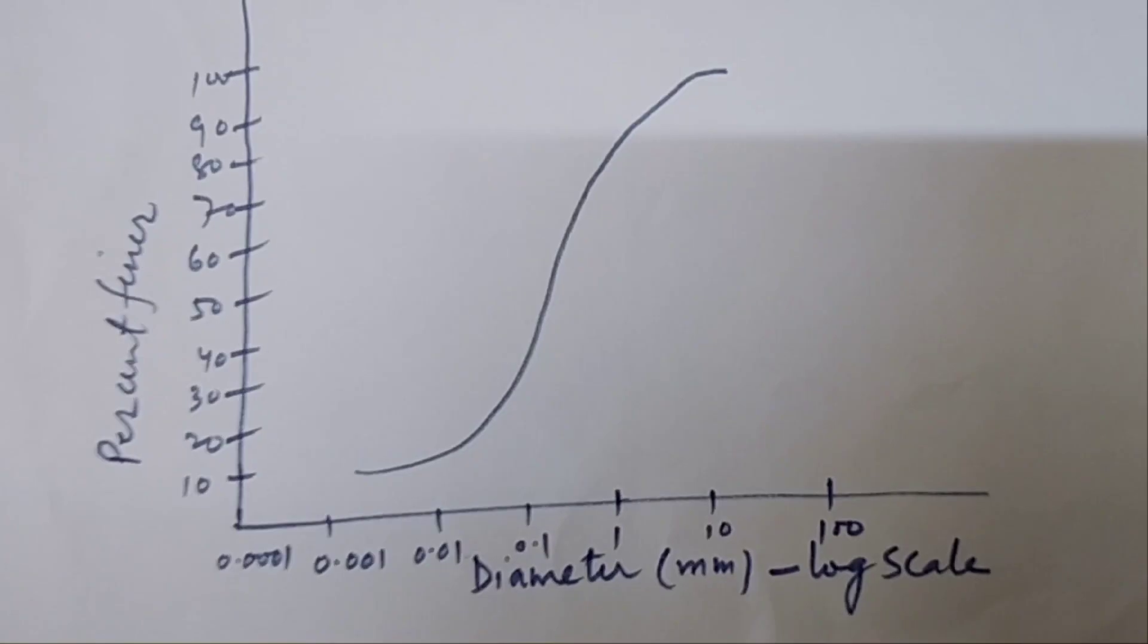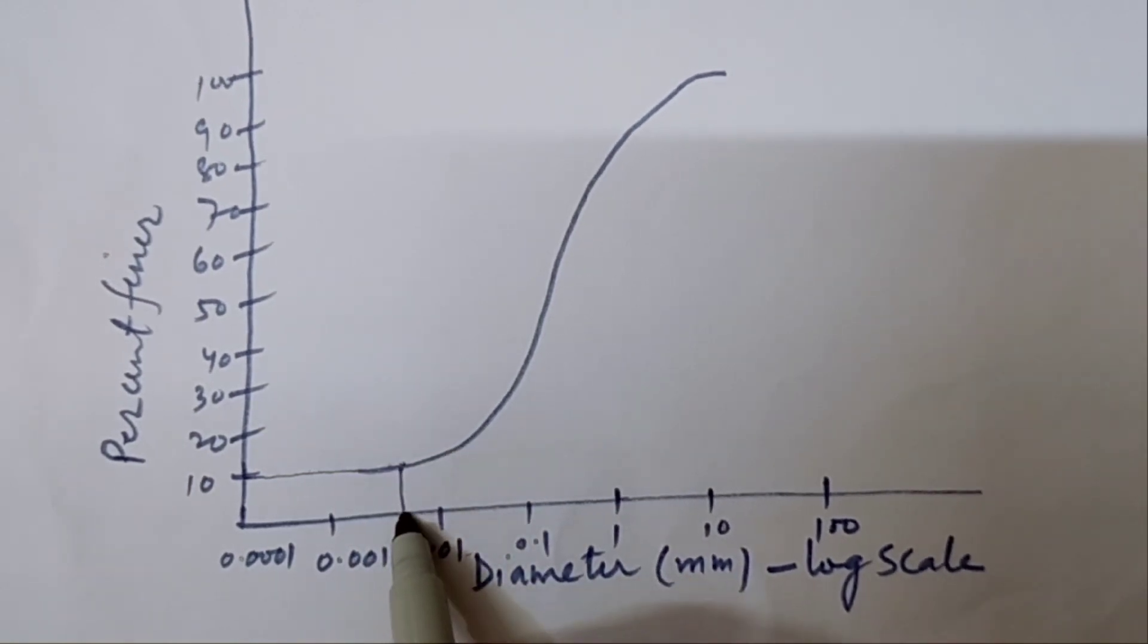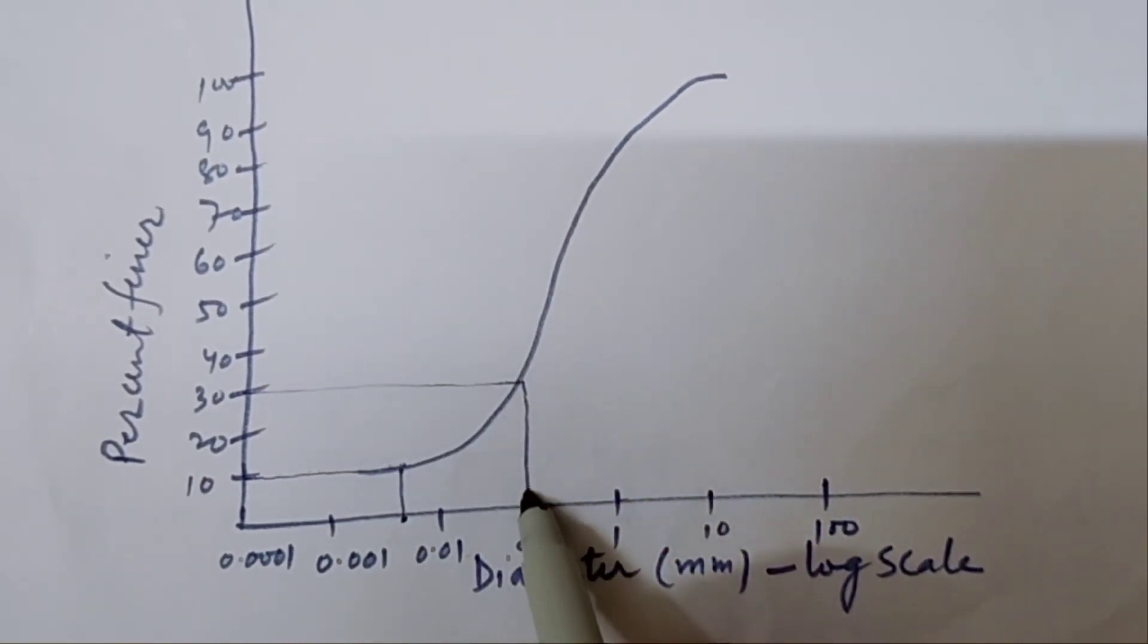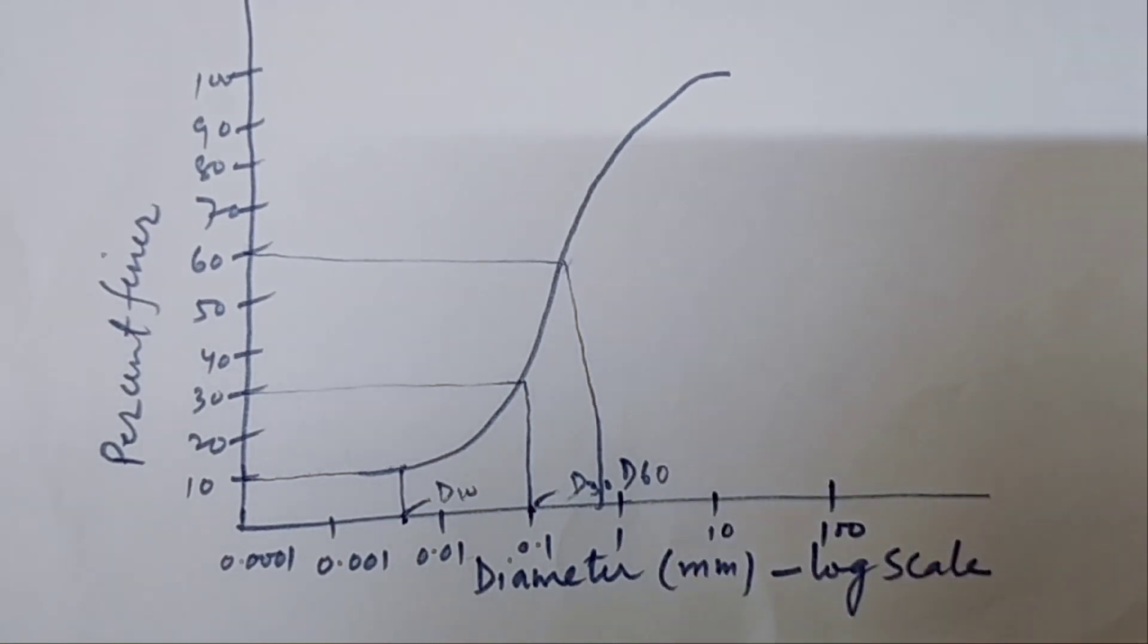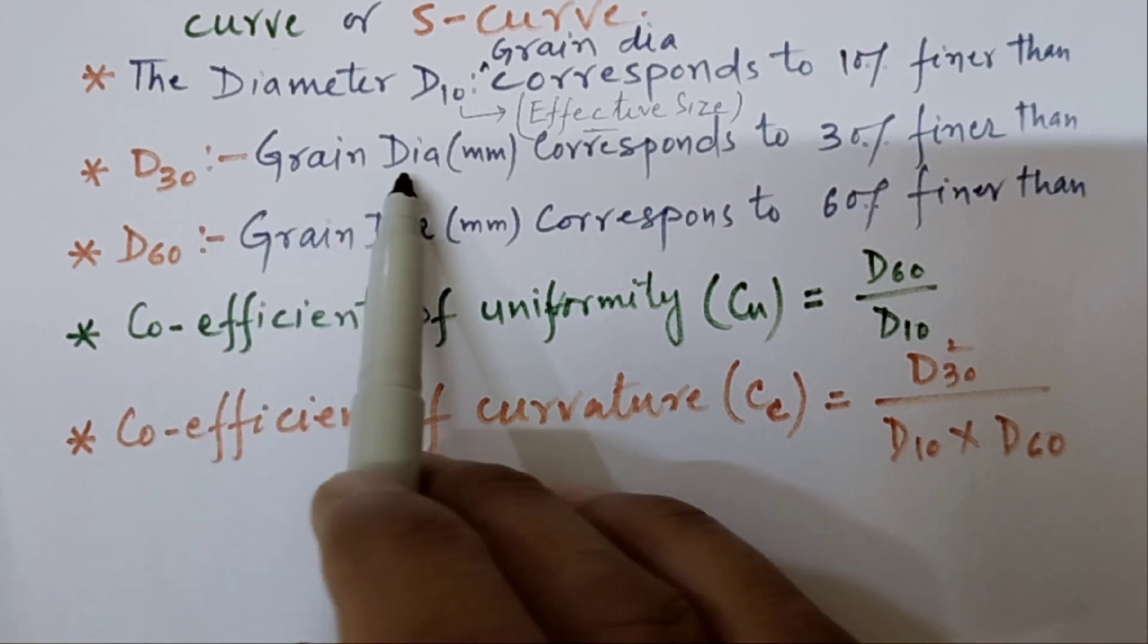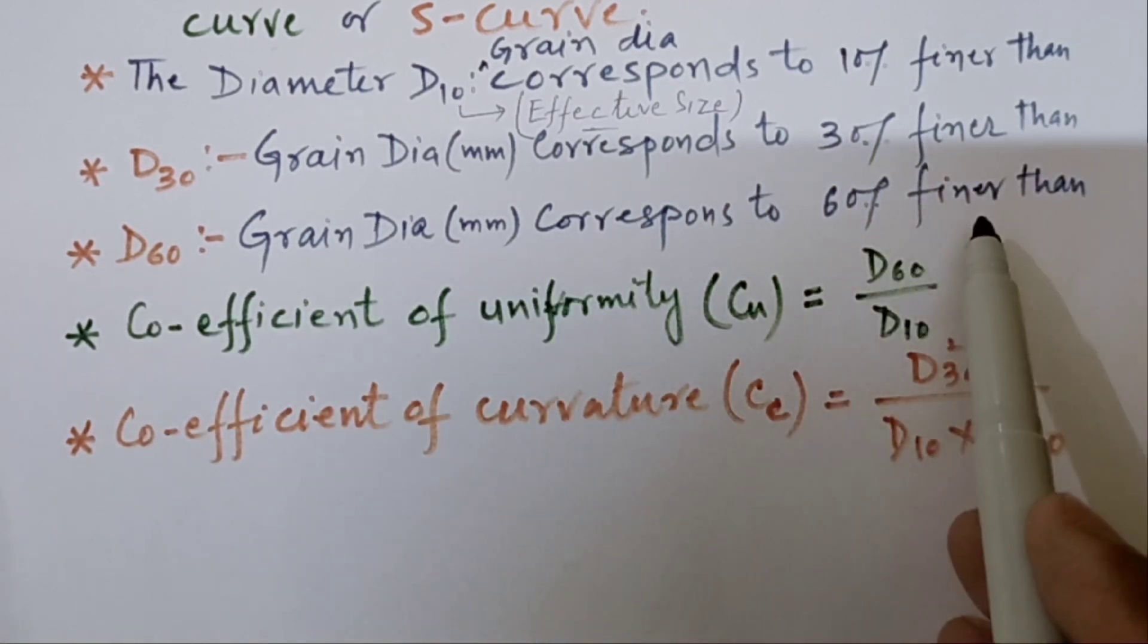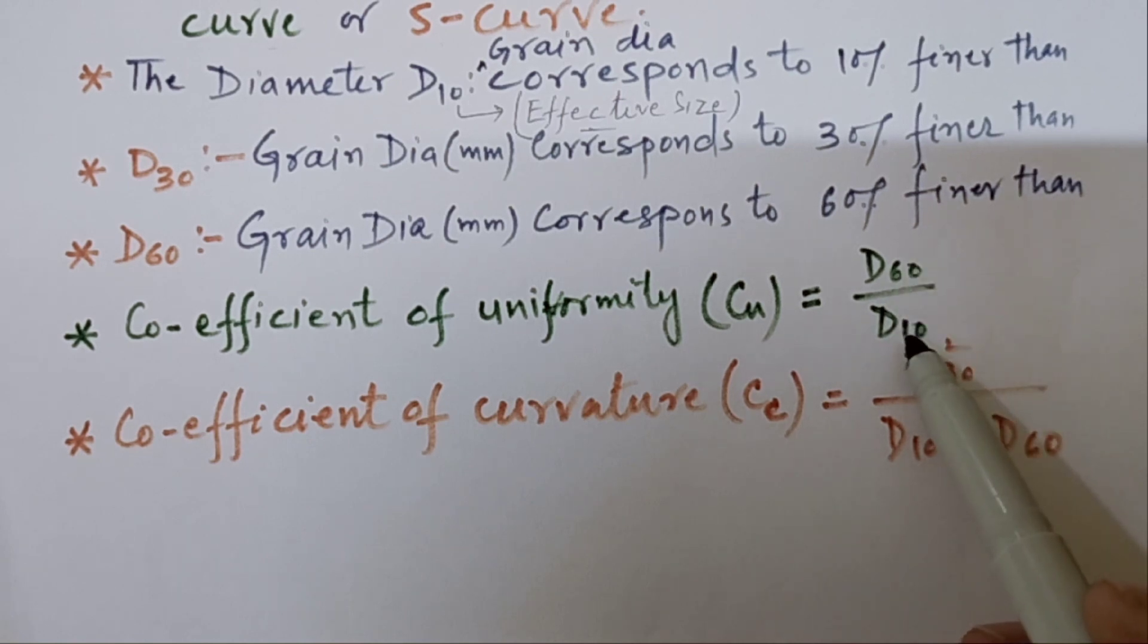Percent finer than 10%, corresponding to this, the value will be D10. Similarly, D30 will be the percent finer than 30%, suppose it touches the graph here, this is D30. Similarly, for D60, this is D60. So, D30 is Grain diameter in millimeter, corresponding to 30% finer. D60 is Grain diameter in millimeter, corresponding to 60% finer. If we have calculated D10, D30 and D60, two coefficients are there. That is, coefficient of uniformity, that is Cu, is equal to D60 by D10. And coefficient of curvature Cc, D30 square by D10 into D60.